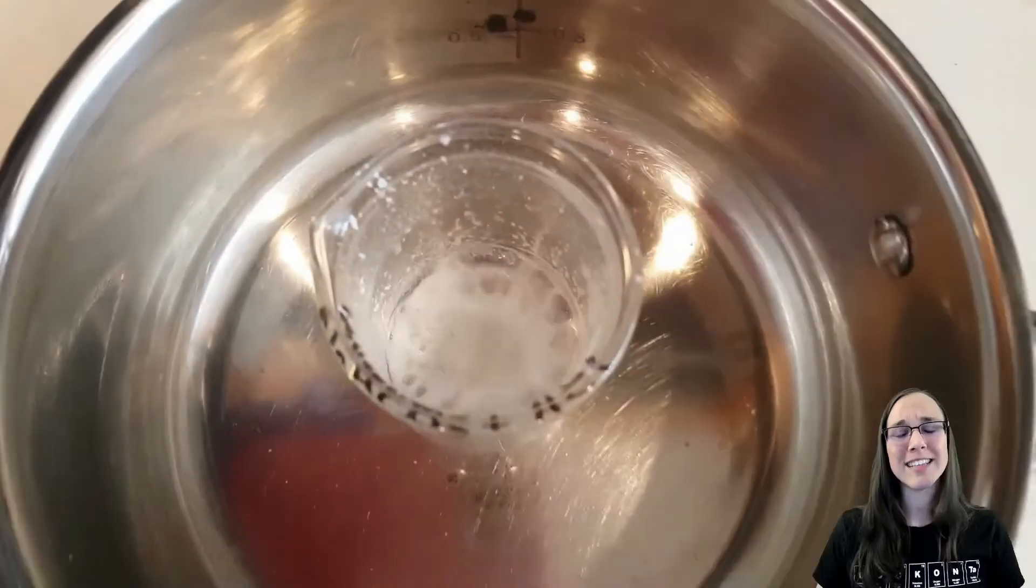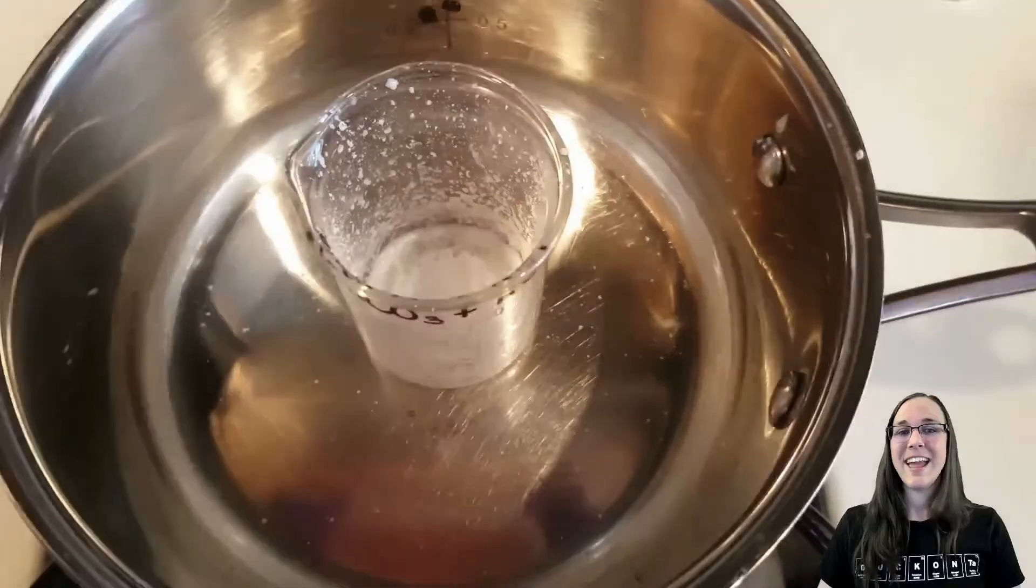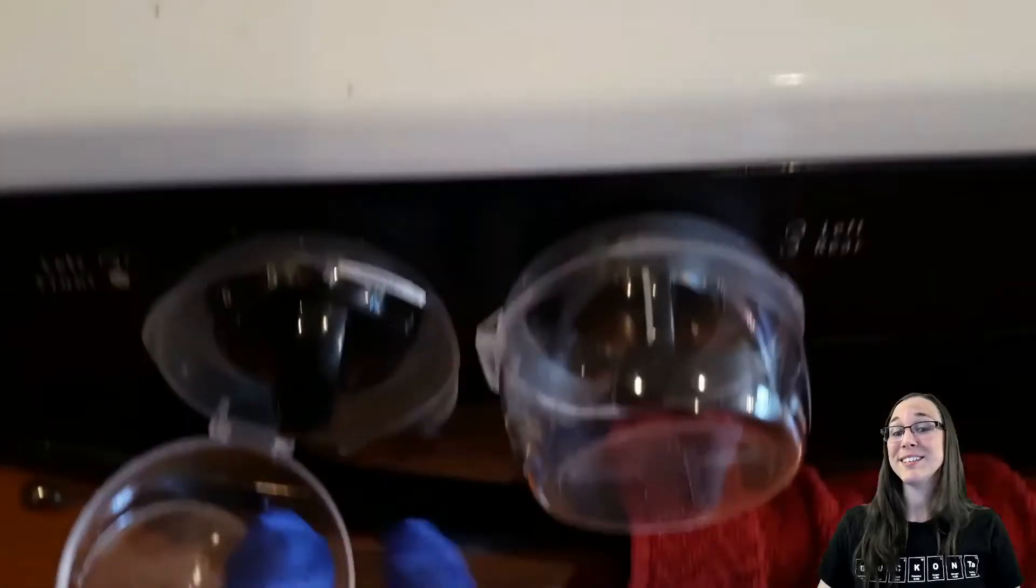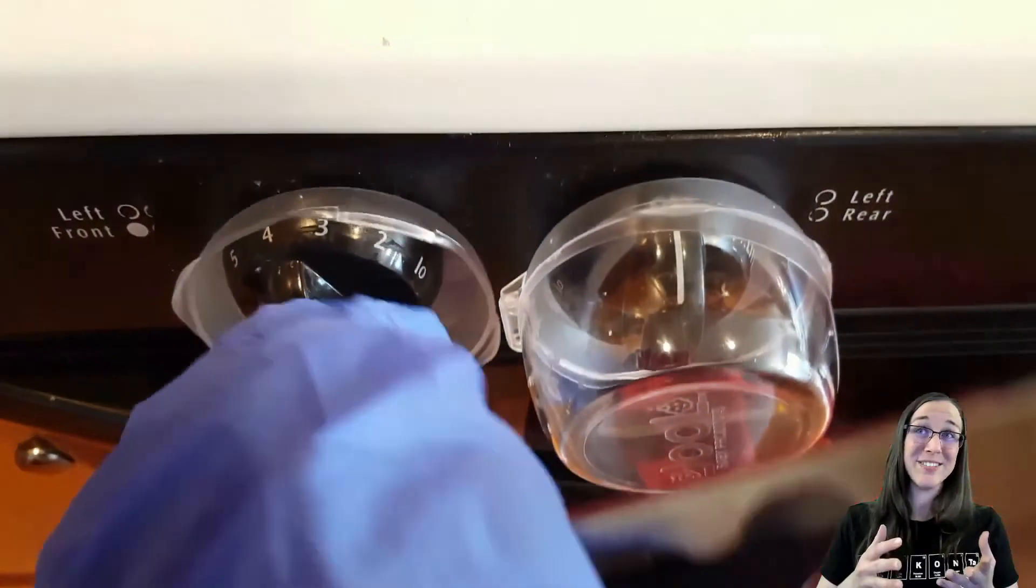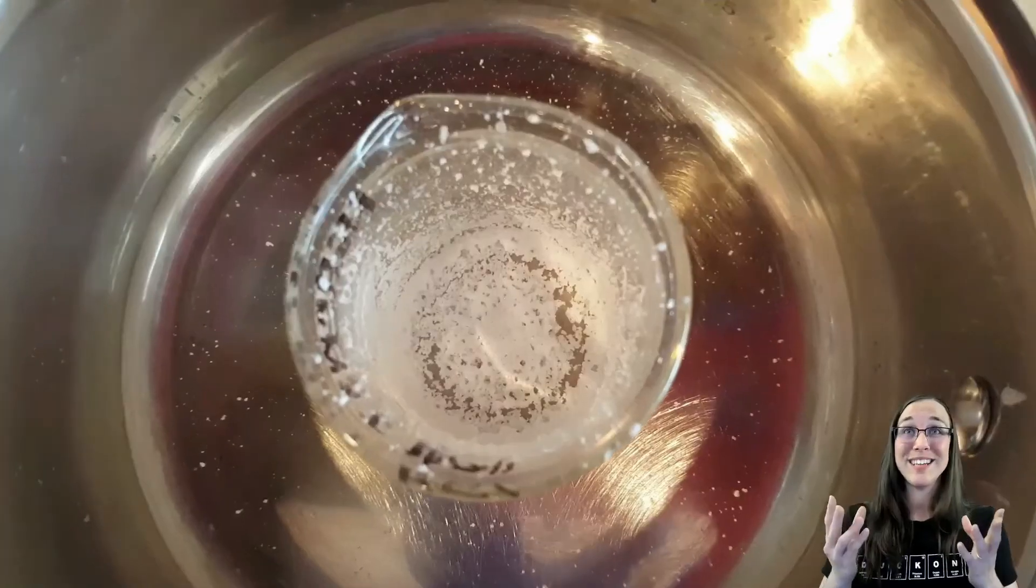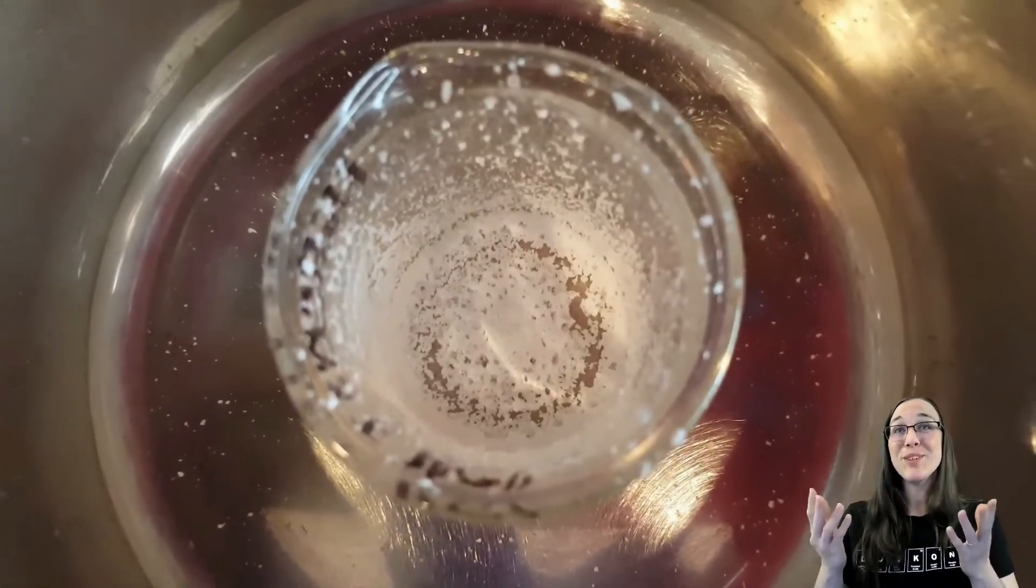Keep swirling that beaker around until all of the water has boiled off. Remember, we're trying to isolate the table salt, NaCl. And you can see that the table salt is starting to drop out, so turn the heat down so you don't just spray your product everywhere. And there's your beautiful table salt.